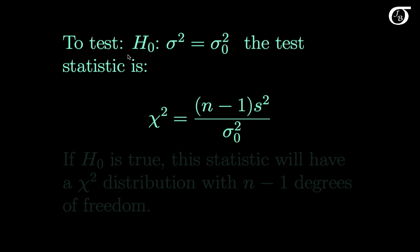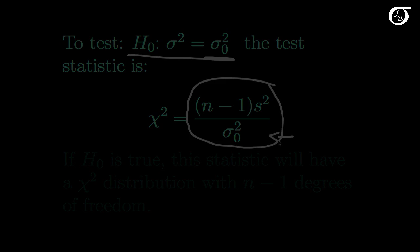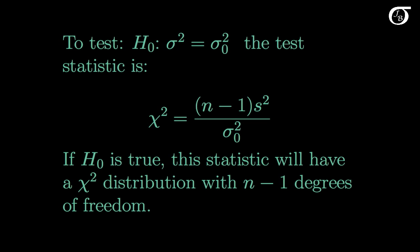To test the null hypothesis that sigma squared is equal to the hypothesized value, we use this test statistic — which is what we had before, except now we have our hypothesized value of sigma squared in the denominator. If the null hypothesis and the assumptions are true, this statistic will have a chi-square distribution with n-1 degrees of freedom. We are going to base our p-values or rejection regions on that notion.